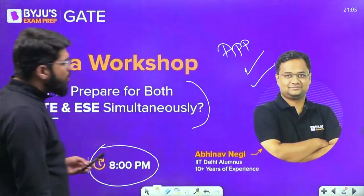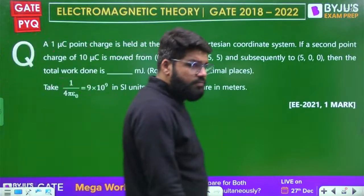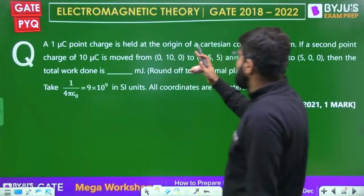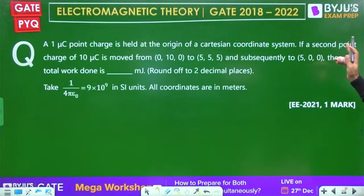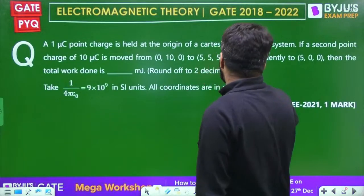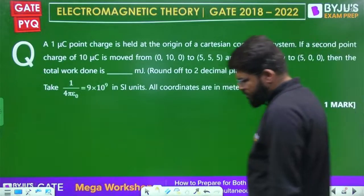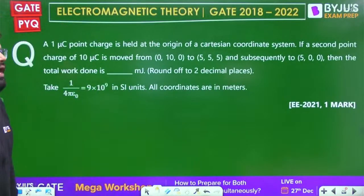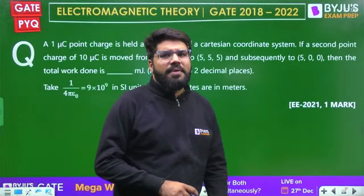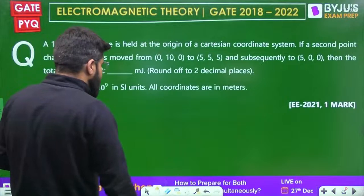Alright, let's begin with the first question for tonight. One micro coulomb point charge is held at the origin of the Cartesian coordinate system. A second point charge of 10 micro coulombs is moved from (0, 10, 0) to (5, 5, 5), and subsequently to (5, 0, 0). The total work done is how much? This is a GATE 2021 one-mark question. It's a simple one - let me explain.